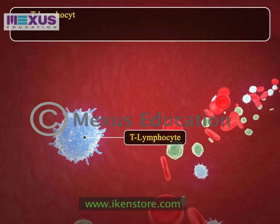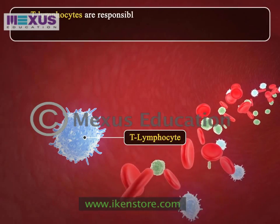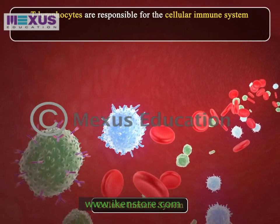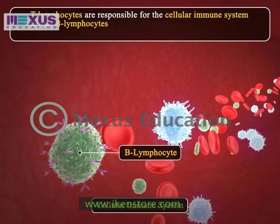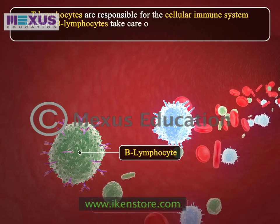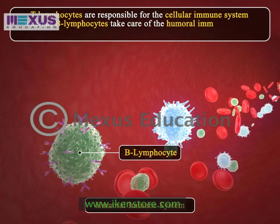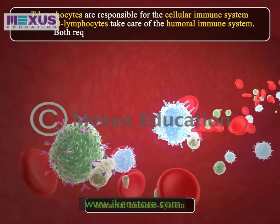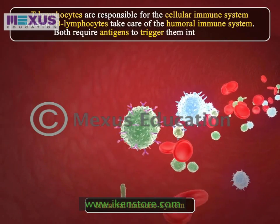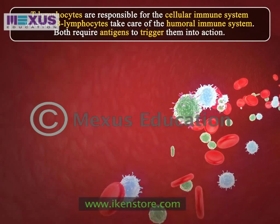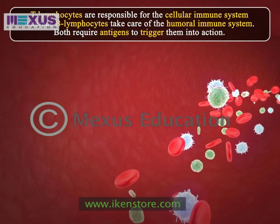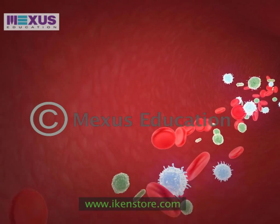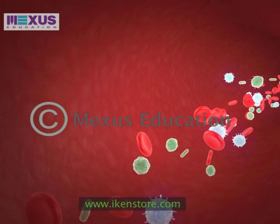T lymphocytes are responsible for the cellular immune system, whereas B lymphocytes take care of the humoral immune system. Both require antigens to trigger them into action; however, both cells respond differently to antigens.